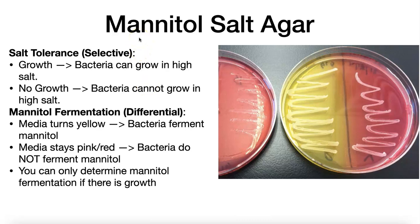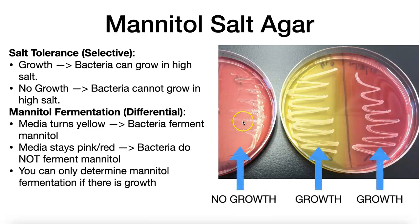The first thing I'm going to talk about is the mannitol salt agar. There are two different bits of information that you can get from this one media. The first is called a salt tolerance test, and what you're looking for here is whether or not your bacteria grow. Over on the right, these are three different bacteria placed onto half of a mannitol salt agar plate. The first half shows where bacteria were placed but they're not growing, whereas in the other two halves there is growth.